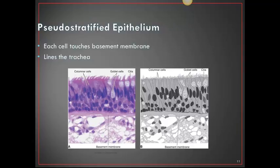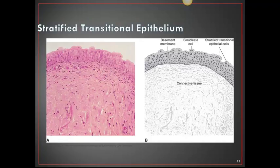Pseudostratified epithelium: each cell touches the basement membrane, and the usual location is the trachea. Many layers of epithelial cells are of all different shapes, with each cell touching the basement membrane — the initial lining membrane at the bottom. Stratified transitional epithelium lines the urinary bladder, with many layers of epithelial cells of various shapes and forms, and some cells can be binucleated.